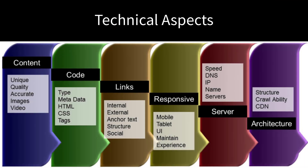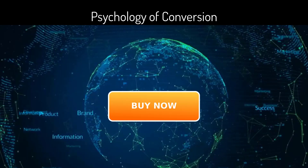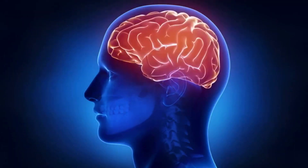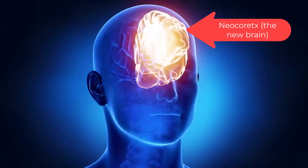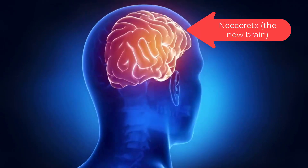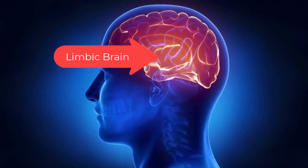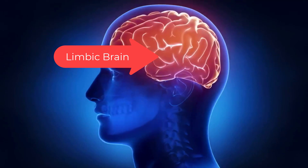All online marketing must have three elements in alignment: the technical aspects — servers, layout, code structure; the traffic — SEO, social, and paid; and the psychology of conversions. Your brain has three basic layers and only one real decision maker. The neocortex thinks and processes rational data. The middle brain, the limbic brain, feels emotions and is our instinct for fight or flight.